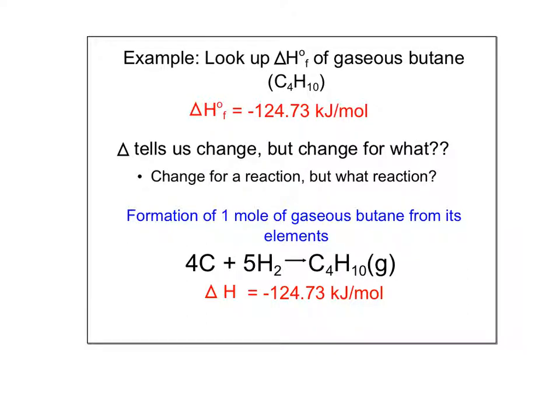The definition of heat of formation is forming that substance, forming one mole of it from its elements. Those elements are at their standard state. Carbon is a standard by itself, a solid, and hydrogen is a diatomic gas. If I'm forming one mole of C4H10, that's going to come from four moles of carbon and five moles of H2. The heat of this reaction forming butane equals negative 124.73 kilojoules per mole, which is the heat of formation forming one mole of butane.